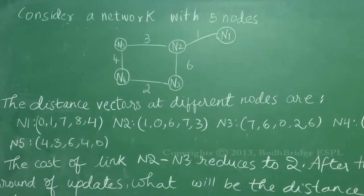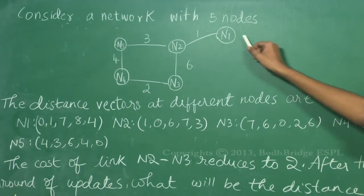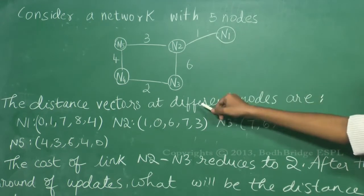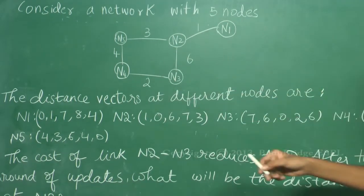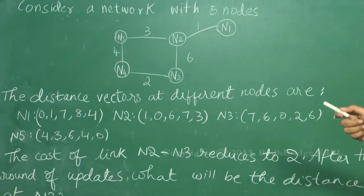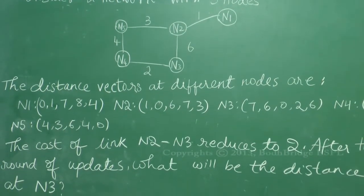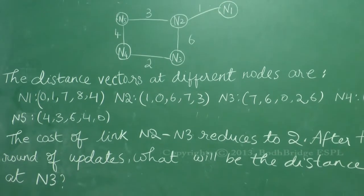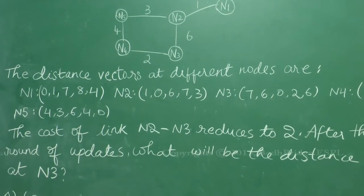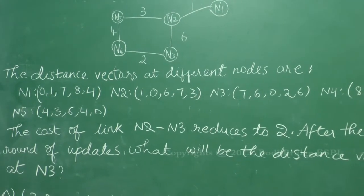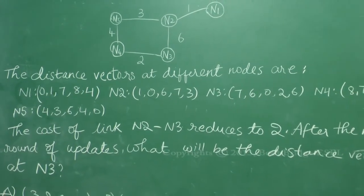The question is: consider a network with 5 nodes N1, N2, N3, N4 and N5. The distance vectors at different nodes are: N1 is 0, 1, 7, 8, 4.